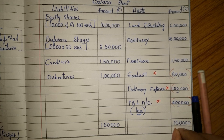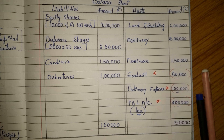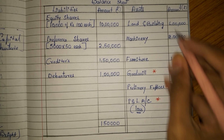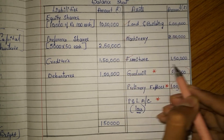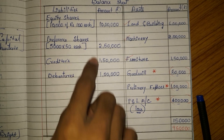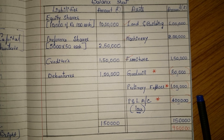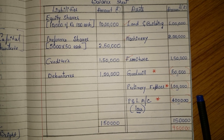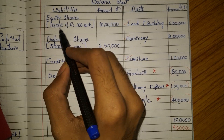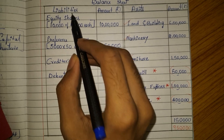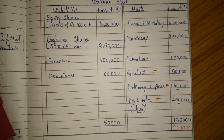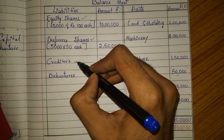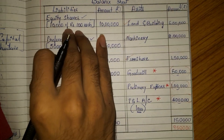If we eliminate 1 lakh, 50,000, and 4 lakh from the asset side, the total comes to 9 lakh 50 thousand. Only land and building, machinery, and furniture will remain. But the liability side still has 1 lakh 50 thousand extra, so the balance sheet must tally. The directors will request all creditors, debenture holders, preference shareholders, and equity shareholders to sacrifice a little bit of their amount.